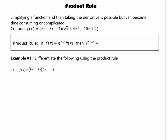To take the derivative of the product of two functions g and h, we first take the derivative of the first function — g prime of x — times just the second function the way it is. Then we add, keeping the first function exactly the way it is, and take the derivative of the second function. That's the product rule. Anytime you have the product of two functions you need to use this rule — you can't just take the derivative of each piece and multiply them together.